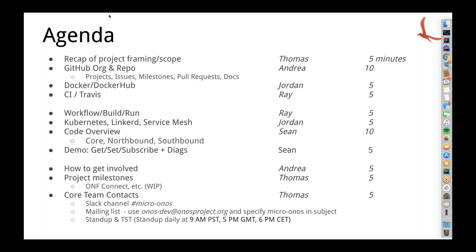As discussed in past meetings, we maintain the ONOS branding. The new architecture is referred to as micro-ONOS architecture because it's based on microservices and gRPC, oriented towards new-generation SDN protocols such as P4Runtime, gNMI, and gNOI, making heavy use of standard YANG models such as OpenConfig. I'll hand it over to Andrea, who will provide specifics on how we're hosting the project and how we're going to be working on it.